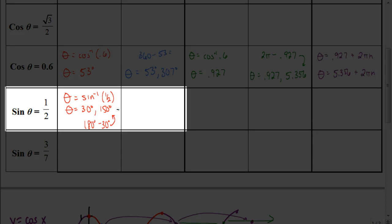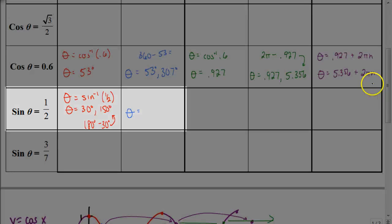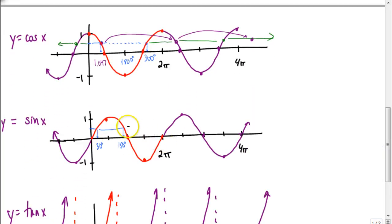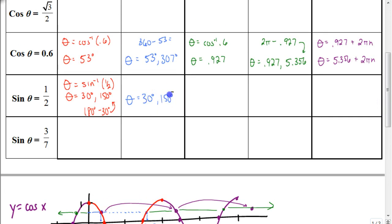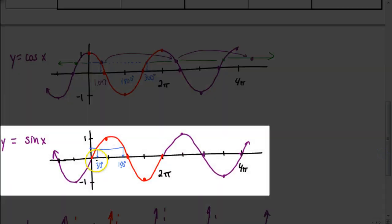Between 0 and 180 degrees there are two solutions for sine: 30 degrees and 150 degrees. Between 0 and 2π it stays the same — no additional solutions appear. There are situations where between 0 and 180 degrees there are no solutions, but between 0 and 360 there are two solutions, and you still always subtract from 180 to find the other solution — even if working with a negative number.